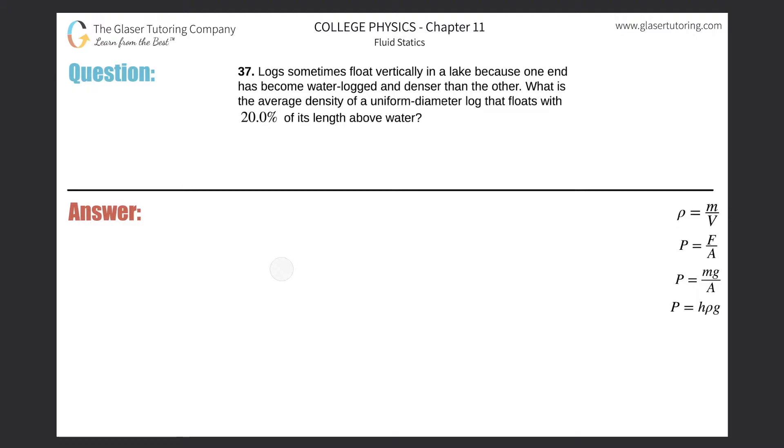Number 37. Logs sometimes float vertically in a lake because one end has become waterlogged and denser than the other. What is the average density of a uniform diameter log that floats with 20% of its length above the water?